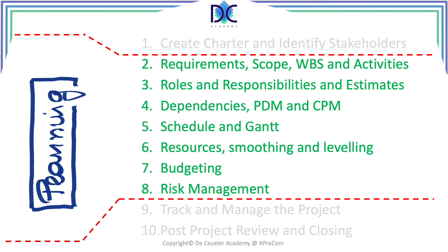Today the AON or Activity on the Node method and the Precedence Diagramming Method (PDM) are the most widely used diagramming methods, but you can still find Activity on the Arrow (AOA) methods like the Arrow Diagramming Method. In this course I will concentrate on the AON and PDM. Once the precedence diagram has been created, we can calculate the start and finish times of all activities, determine the slack or float, and identify the critical path.